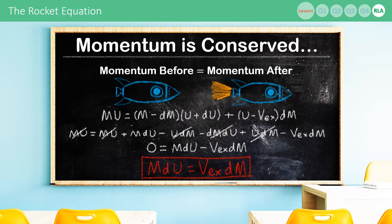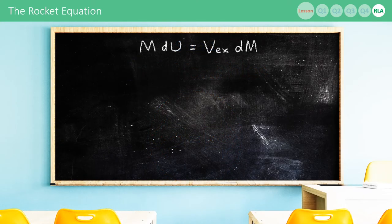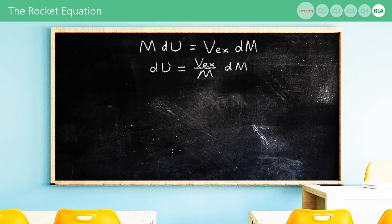The first step of solving our differential equation is to split our variables. We simply divide by m to get du equals vex over m dm, and we're assuming that vex, the exhaust velocity, is constant.